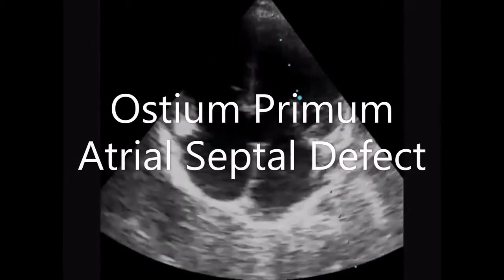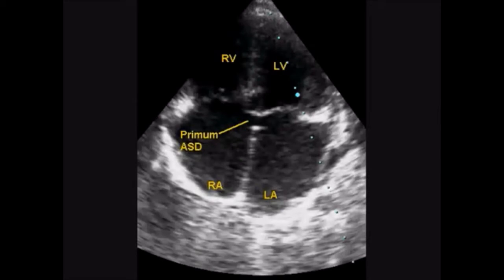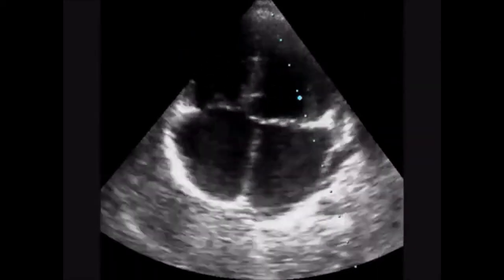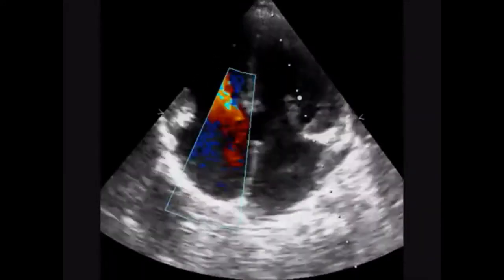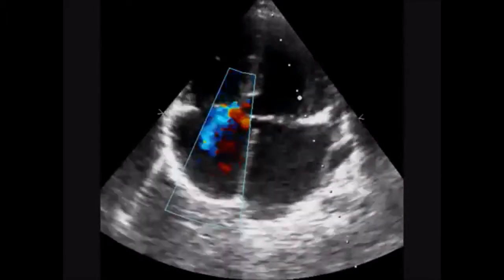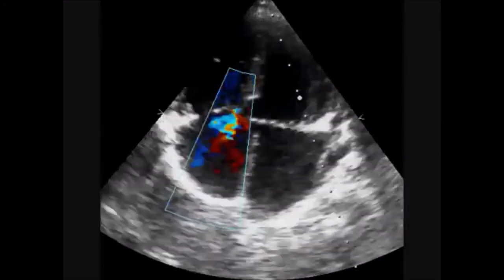This is the echocardiogram in apical four-chamber view showing an ostium primum atrial septal defect. Left to right shunt across the atrial septal defect is seen. Atrioventricular valves are at the same level. Here you can see the tricuspid regurgitation jet in the apical four-chamber view.